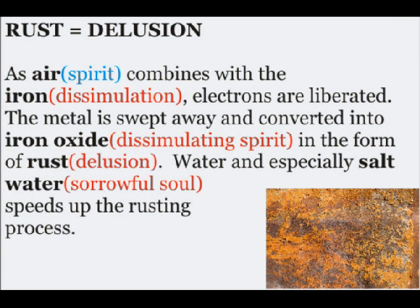Rust represents delusion. As air, or spirit, combines with the iron, or dissimulation, electrons are liberated. The metal is swept away and converted into iron oxide — this is iron and oxygen — which means dissimulating spirit, in the form of rust, or delusion. Water, and especially salt water, or sorrowful soul, speeds up the rusting process.